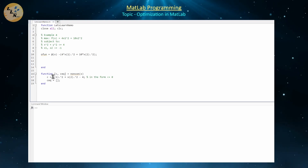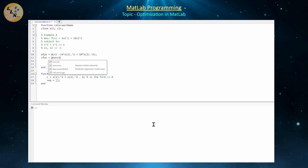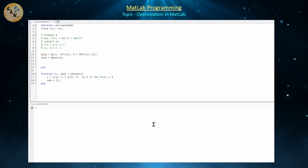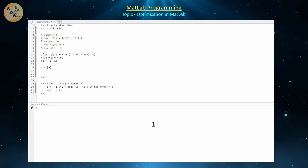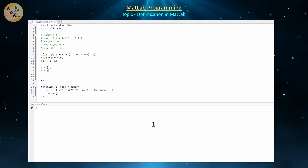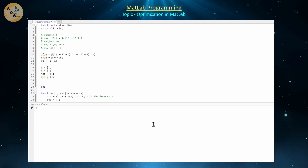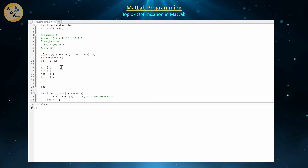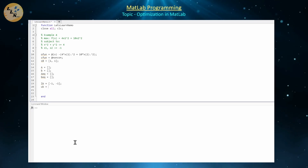Our non-linear constraint function is referenced as @noncon. For the initialization, x0 = [1, 1]. There are no linear inequality or equality constraints, so A, B, Aeq, and Beq are all empty. The lower bound LB = [−1, −1] for both variables, and the upper bound UB = [inf, inf].